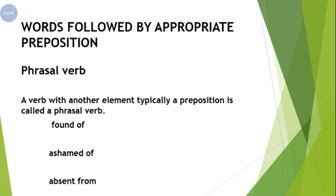In our last lesson I told you about a term called phrasal verb. We are not just studying single prepositions — we are basically dealing with phrasal verbs. A verb with another element, typically a preposition, is called a phrasal verb. Wo verb jiske saath koi aur element bhi ho, typically preposition, wo phrasal verb kehlata hai.